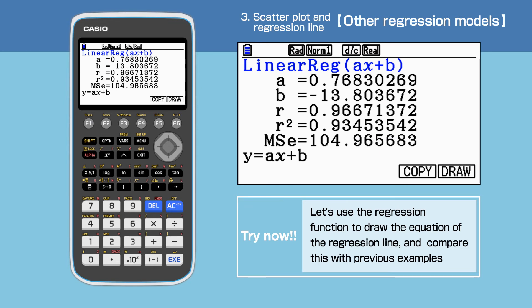The equation of the regression line is Y equals 0.768X minus 13.8. The correlation coefficient is 0.967, which shows a strong positive correlation.